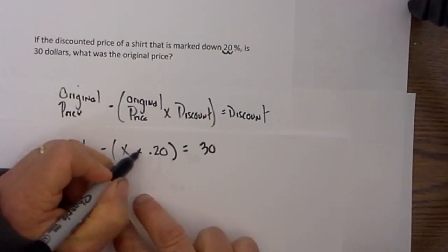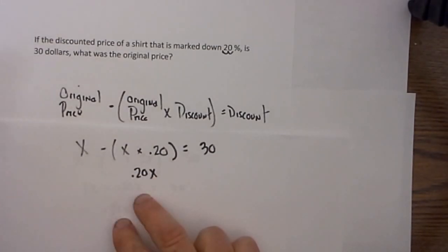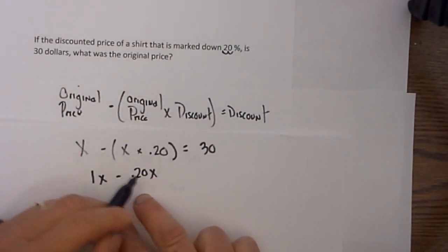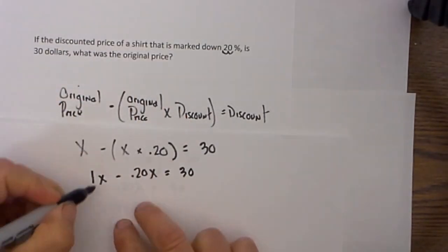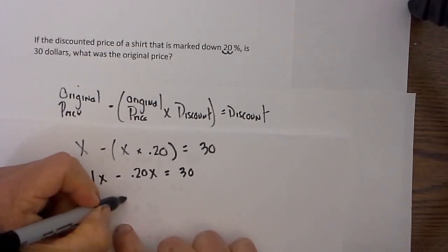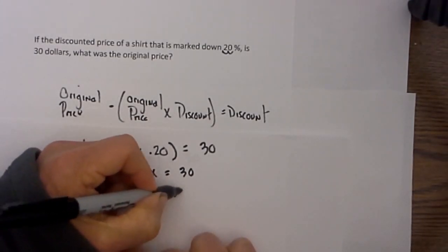Let's do the parenthesis first. x times .2 is .2x, and then I will put a 1 in front of this x just so you can visually see what I am doing. I will bring the 30 down, and then I can combine like terms. 1x minus .2x is .8x, and that is equal to 30.